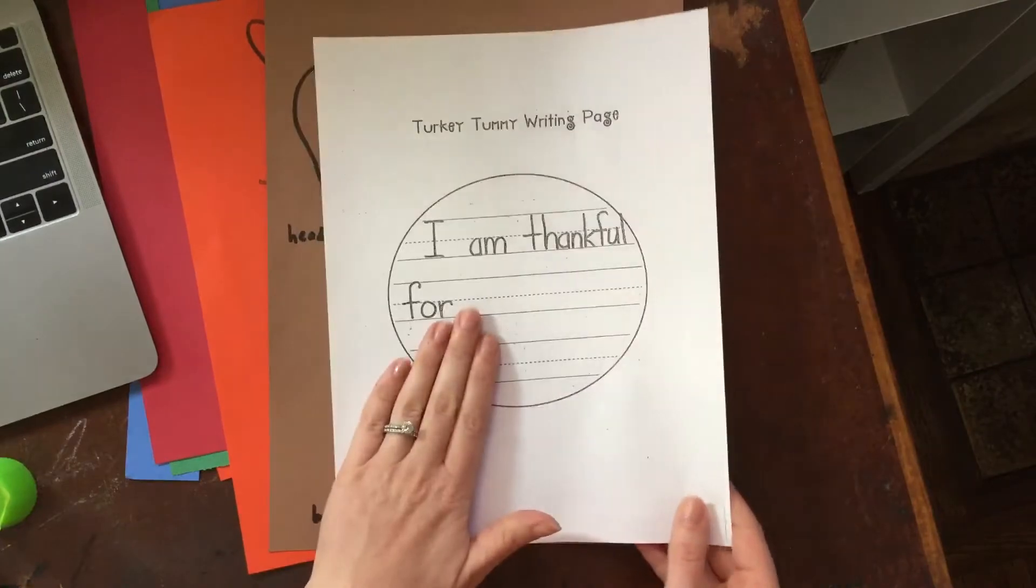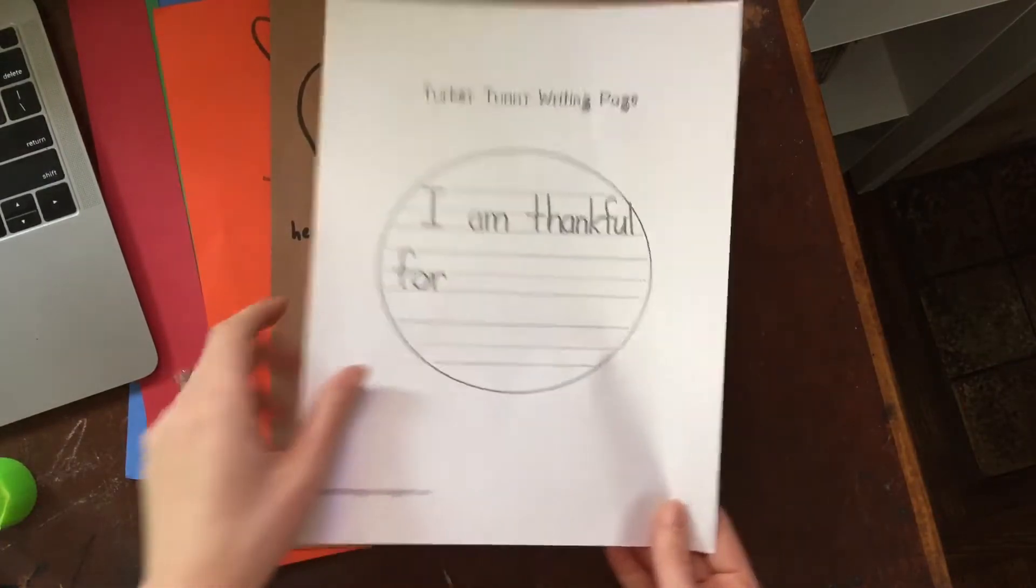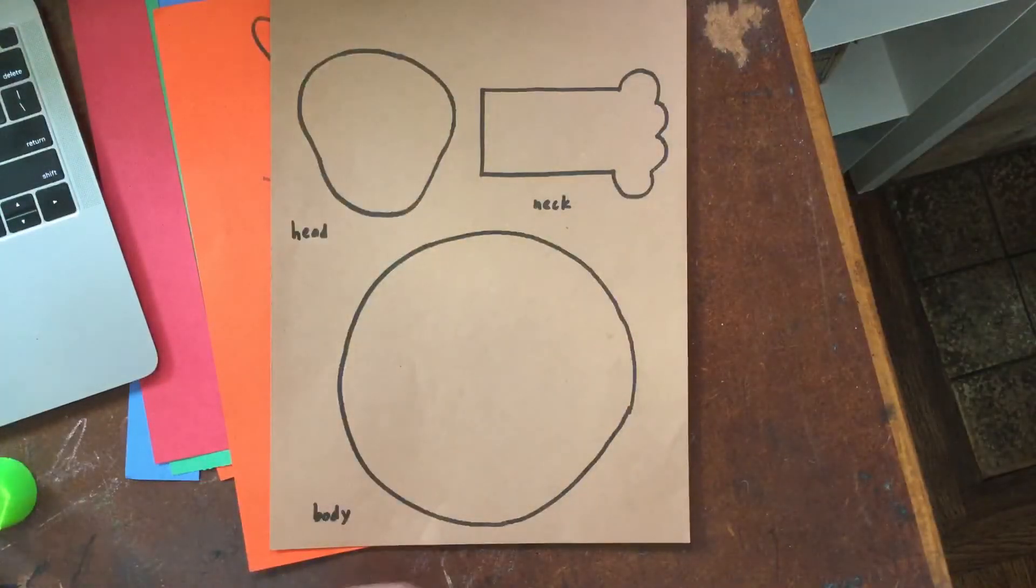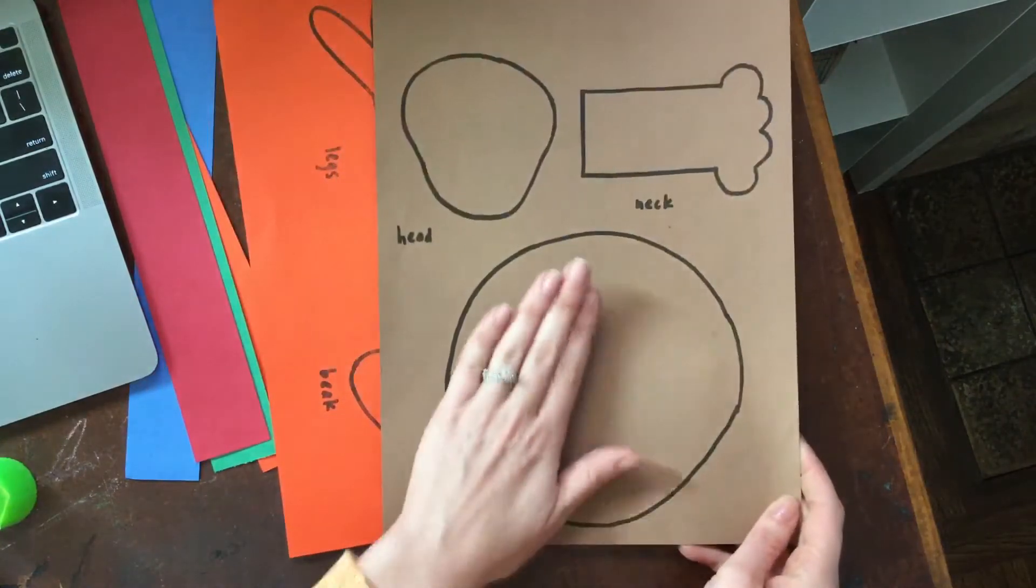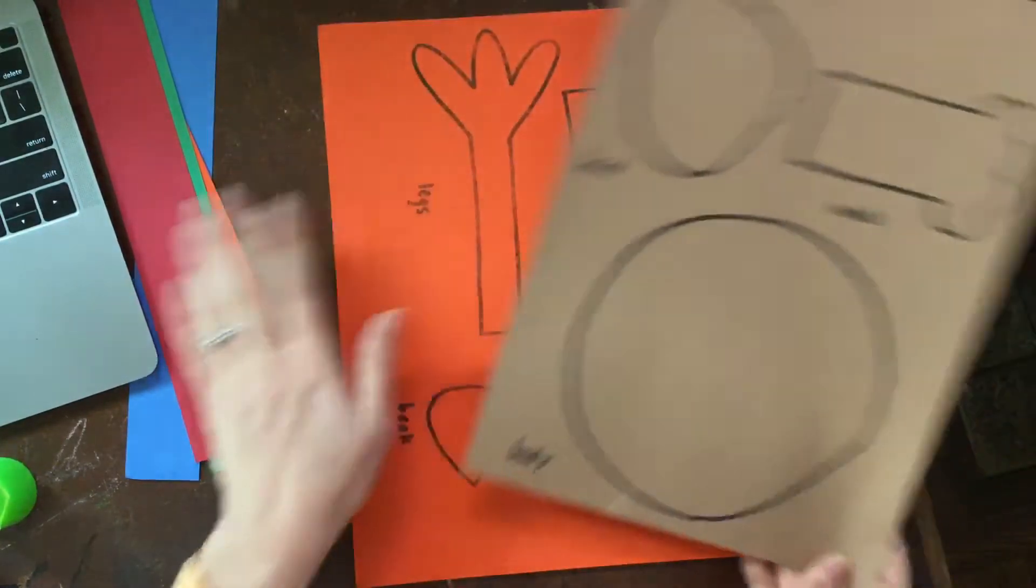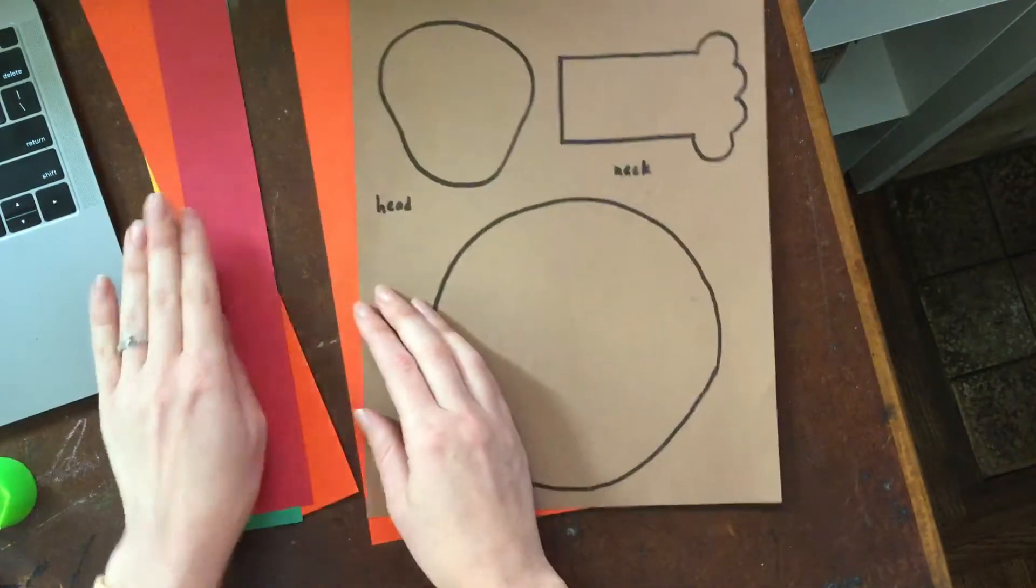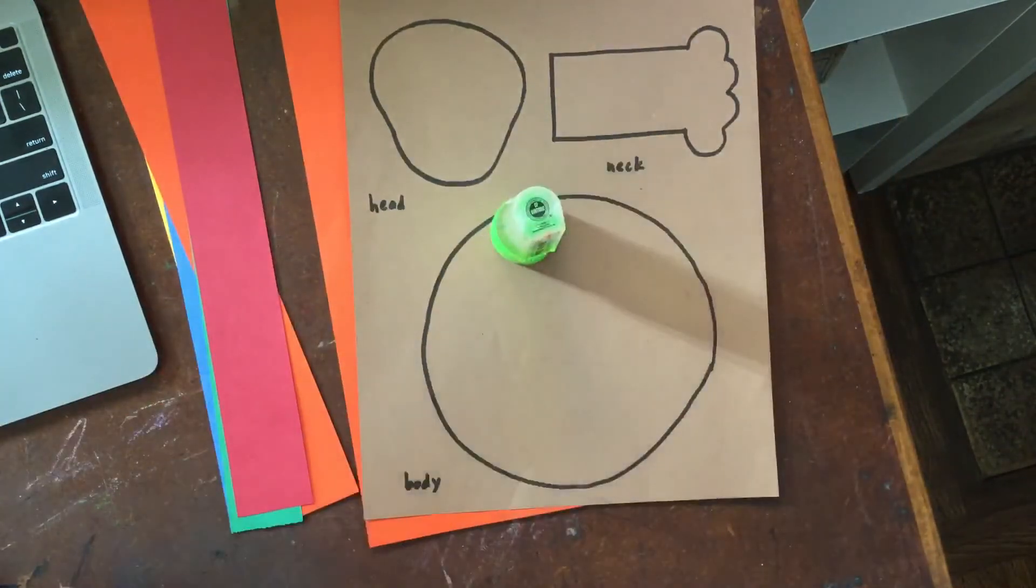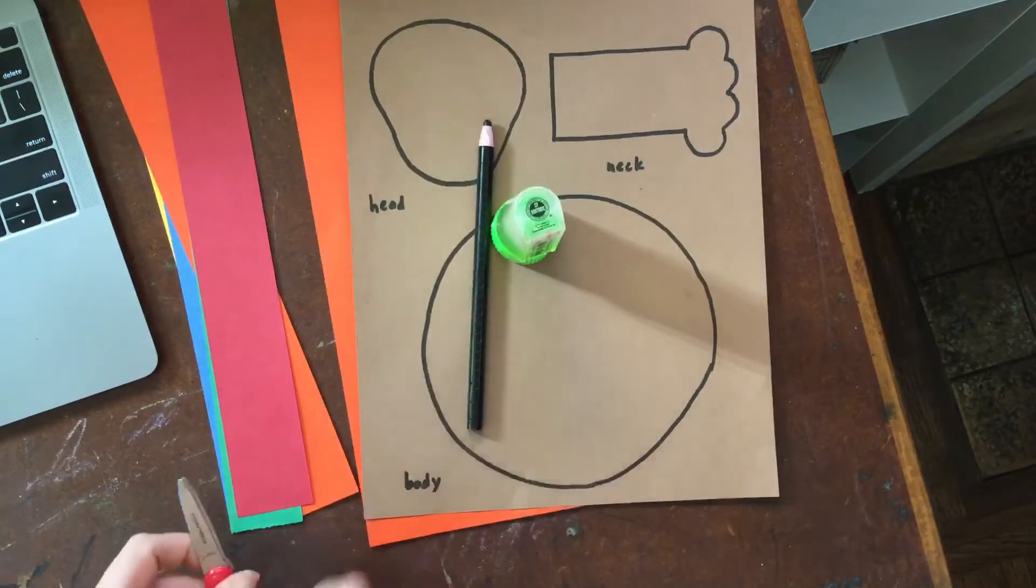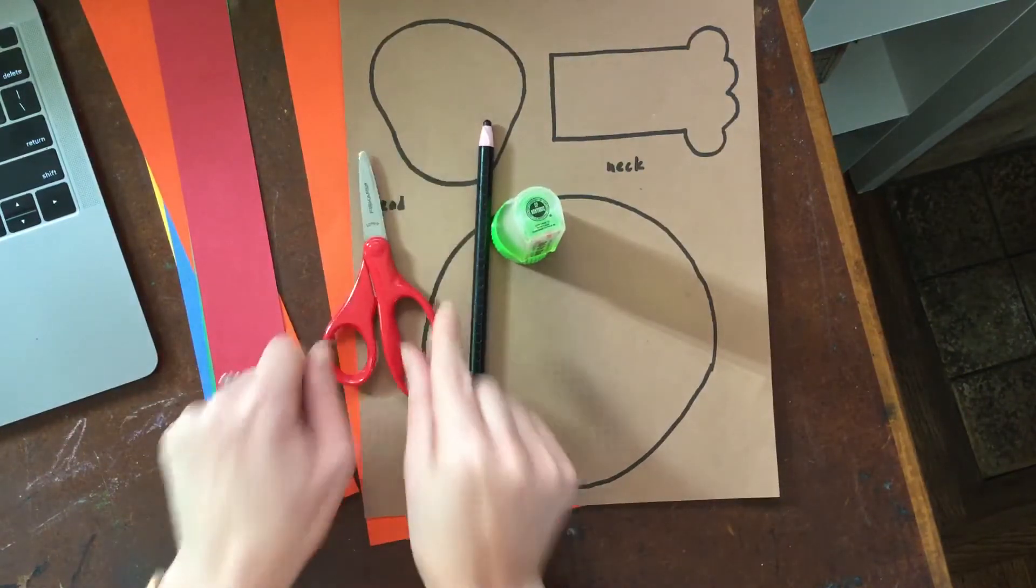So you're going to need this page that's for later, so I'm going to set that aside. Then you're going to need your brown page, your orange page like that, and then you're going to have these colored strips that will be the feathers. You're also going to need glue, a black crayon, and scissors.